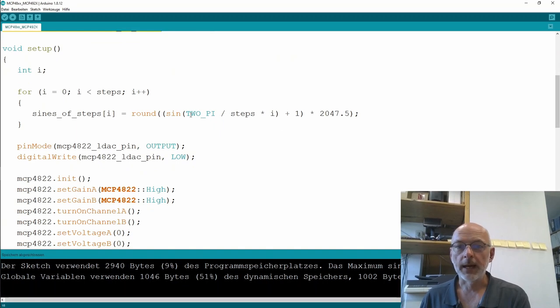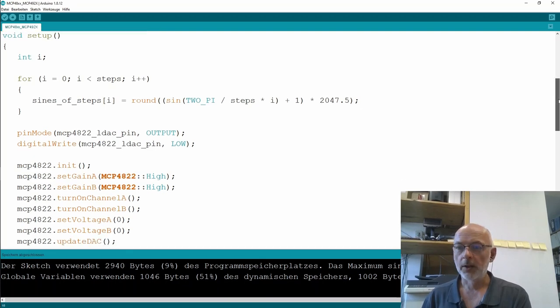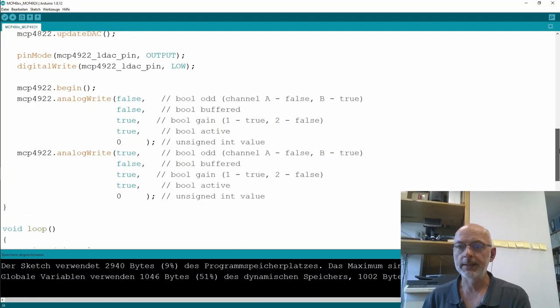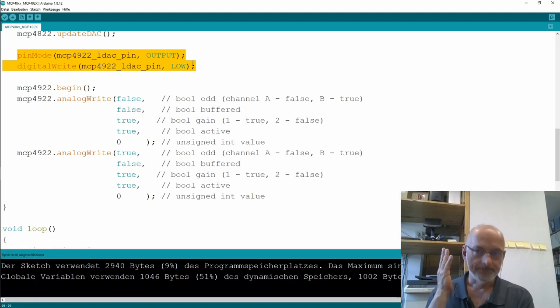Setup - setting up the array with the sine values exactly the same. That's all the stuff from the 4822 and now here's the new stuff. So as for the 4822, set the LDAC pin as output and set it to low. So again, we will use that probably in the second video.